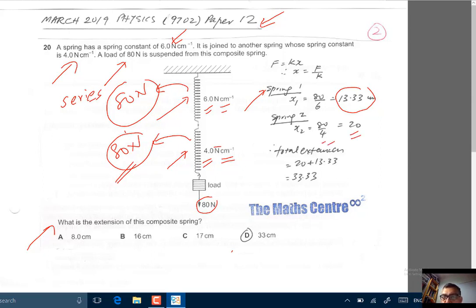So, total extension will be 20 plus 13.33, you will get 33.33 cm. Correct response, D.